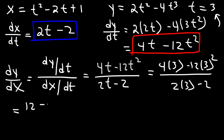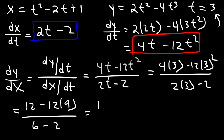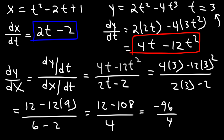4 times 3 is 12. 3 squared is 9. 2 times 3 is 6. 12 times 9: 10 times 9 is 90, 2 times 9 is 18, so 90 plus 18 is 108. So this is 12 minus 108, and 6 minus 2 is 4. 12 minus 108 is negative 96, and negative 96 divided by 4 is negative 24. So the slope is negative 24 when t is equal to 3.